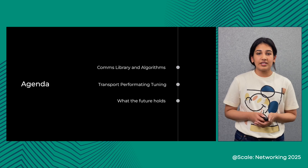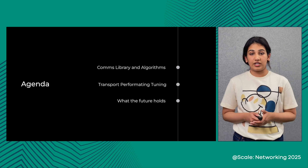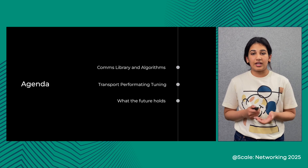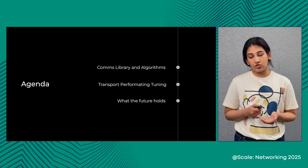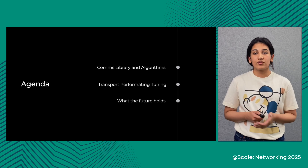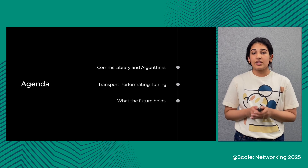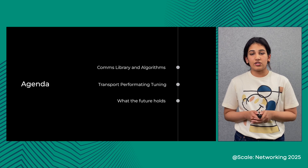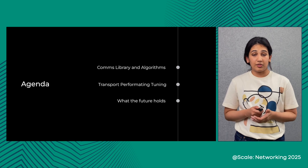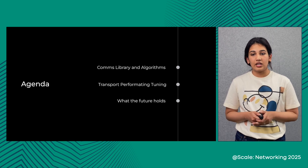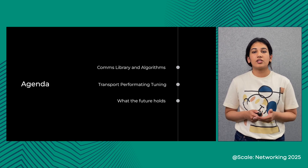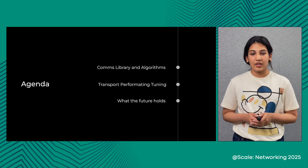We addressed the first challenge with large networks and higher job scales. Over the next few slides, we'll specifically address the second challenge: poor comms library performance with baseline NCCL, which is made worse with higher network latency. We talk about how we evolved our comms library with new algorithms and transport stack to solve these problems.